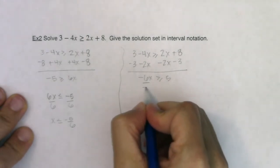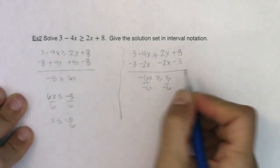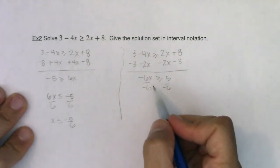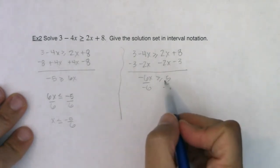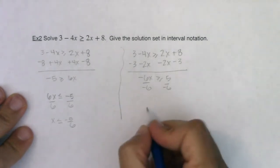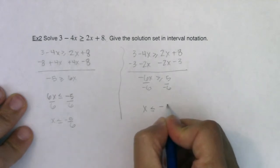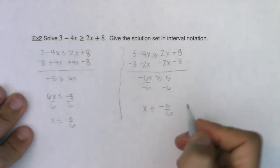We're going to divide by negative 6, but we're going to remember, well hey, we're dividing an inequality by a negative number, so I need to change that direction of the inequality. So I would still get x less than or equal to negative 5/6.